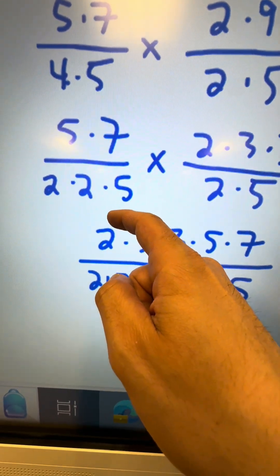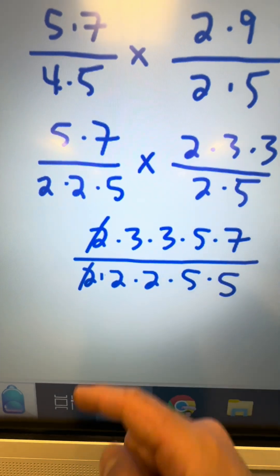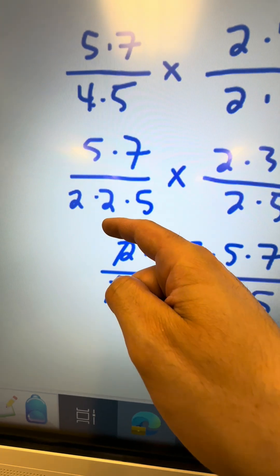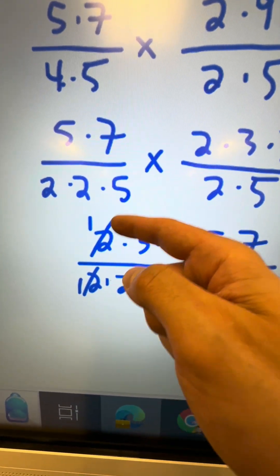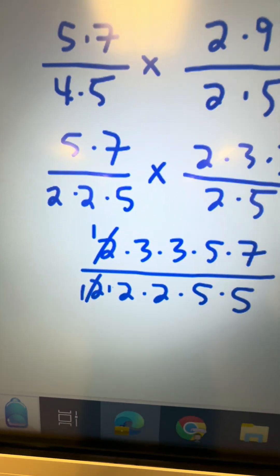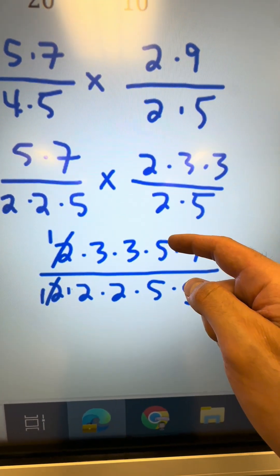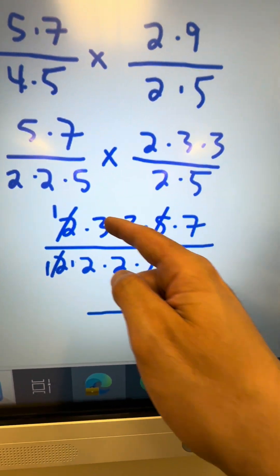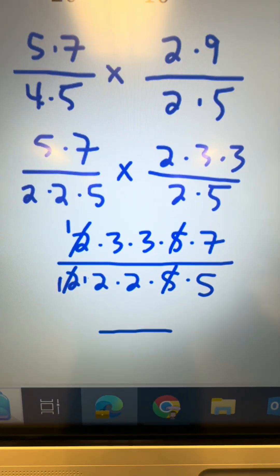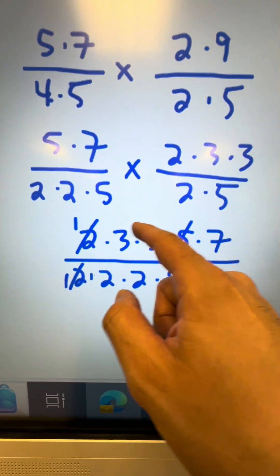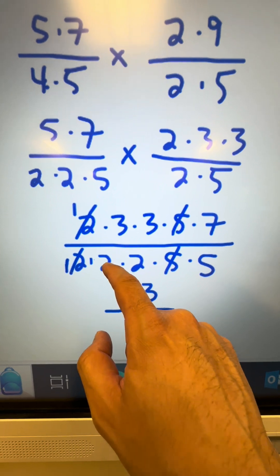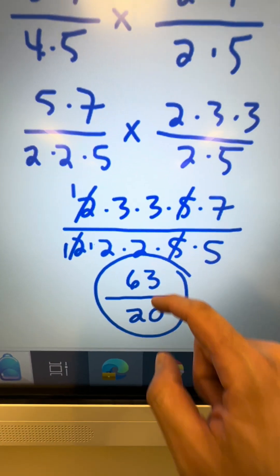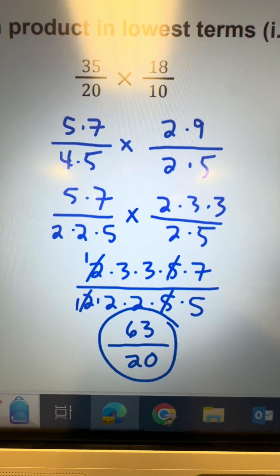Now I go ahead and eliminate the common factors. A 2 divided by 2 is really just 1, so we say we eliminate common factors because it just reduces to 1. Another pair of common factors is 5 and 5. Then I multiply what's left: 3 times 3 is 9, 9 times 7 is 63 on top; 2 times 2 is 4, 4 times 5 is 20 on the bottom. So the same answer as before — 63 over 20 — just a different way to do it.